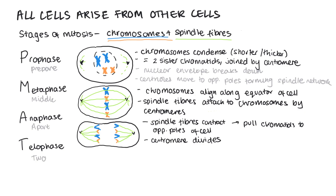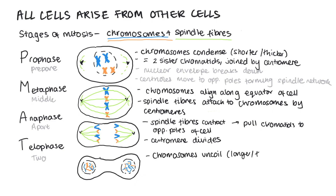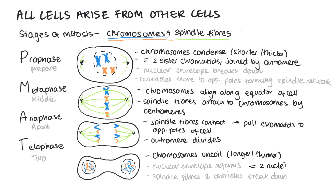In telophase, we can think of the T as standing for two. During telophase, the chromosomes uncoil, becoming longer and thinner so we can no longer see them in detail through the microscope. The nuclear envelope is going to reform, and therefore we're going to see two nuclei. The spindle fibres and centrioles will also start to break down. Remember, cytokinesis normally happens next, but it's not part of mitosis itself.